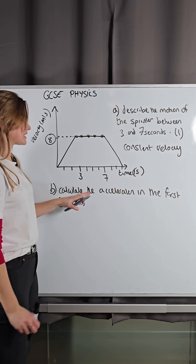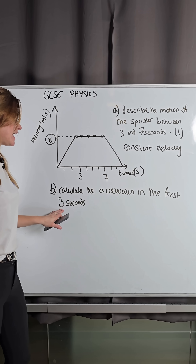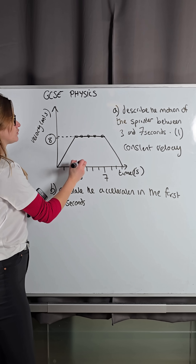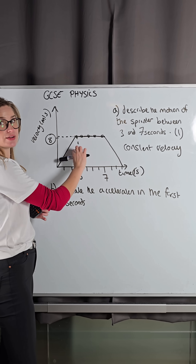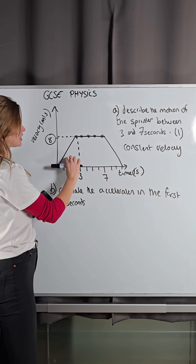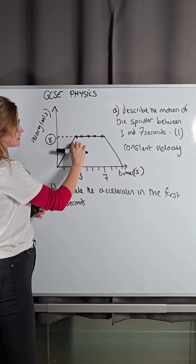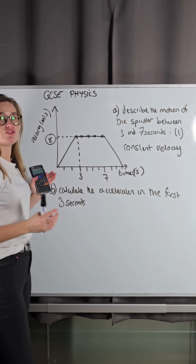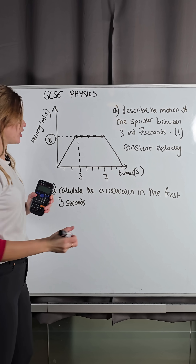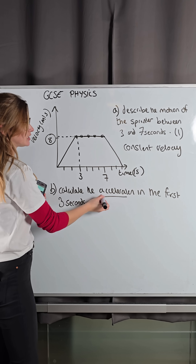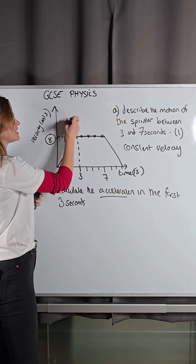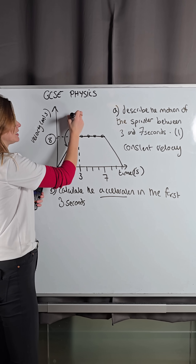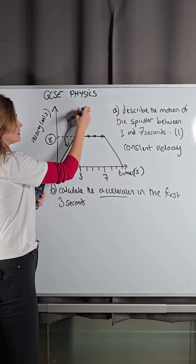Next one says calculate the acceleration in the first 3 seconds. So in the first 3 seconds we can see that it's accelerating — its velocity is increasing. In a velocity-time graph, how do I get the acceleration? The acceleration is known as the gradient of the line.